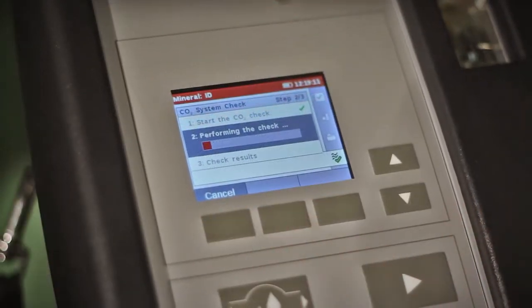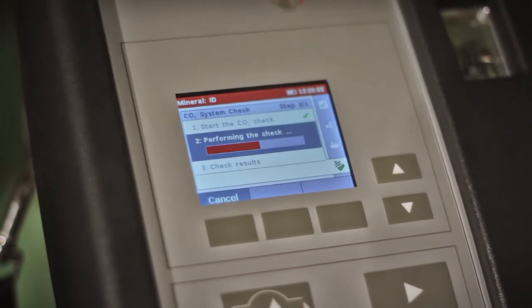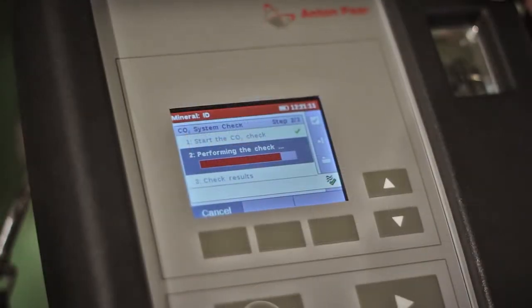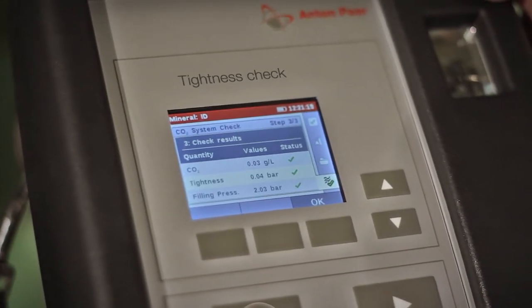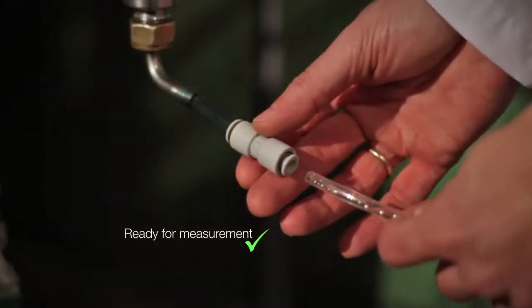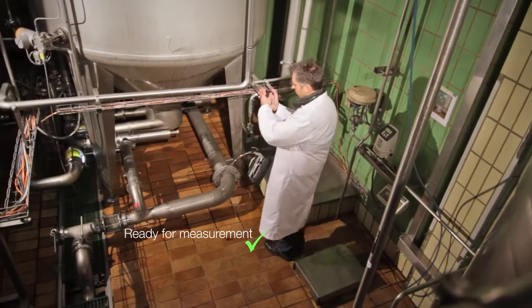You can have the system automatically check the zero point of the CO2 measurement and the tightness of the measuring chamber. These check results give you a reliable go for a long working day.